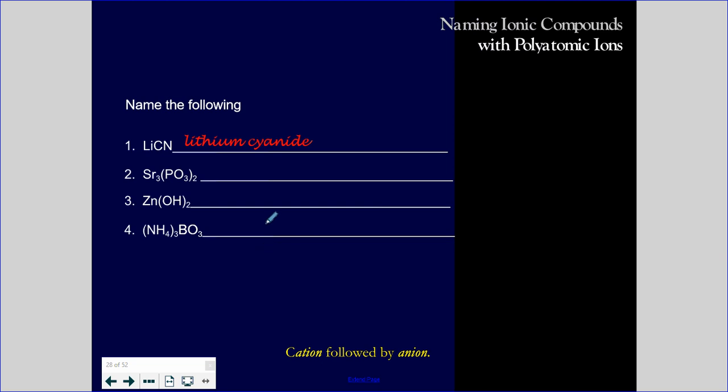Examples, examples, examples. Lithium cyanide. Got it. Lithium bound to cyanide ion. Strontium bound to phosphite. Strontium phosphite. This is shooting fish in a barrel, kids. Zinc and hydroxide. Zinc hydroxide. I don't care how many of them there are. It doesn't matter. The quantity is in the charge.